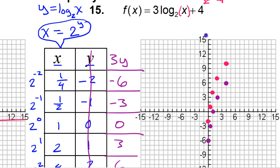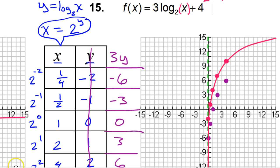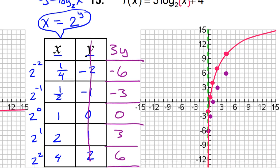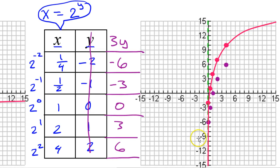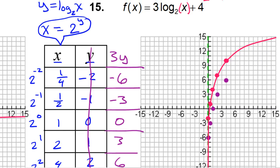So let's draw the asymptote and draw the curve. So your final graph should look something like this.